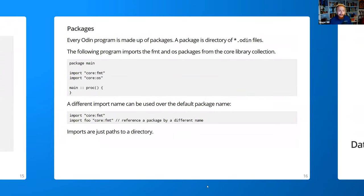In Odin, everything is made up of packages, and a package is just a directory containing Odin files. When you import a package, you're importing a directory of Odin files. In this example we import the fmt and os packages from the core library collection. The core library collection is a defined path for searching. You can define your own library collections easily. If you want a different import name from the directory path, you can set the name yourself — for instance, instead of fmt, you can call it foo.